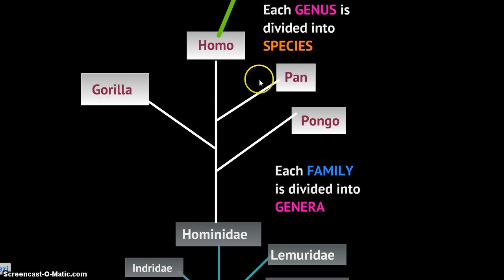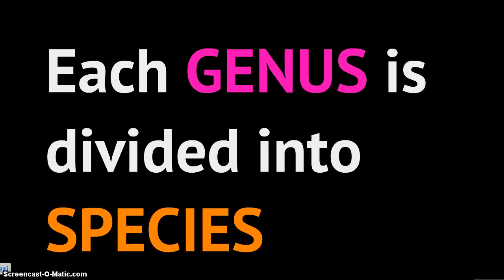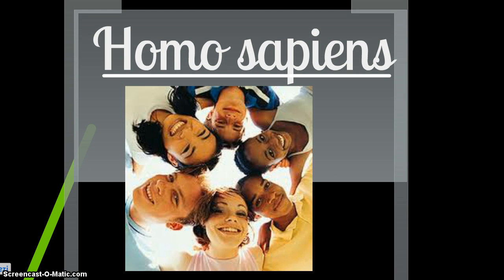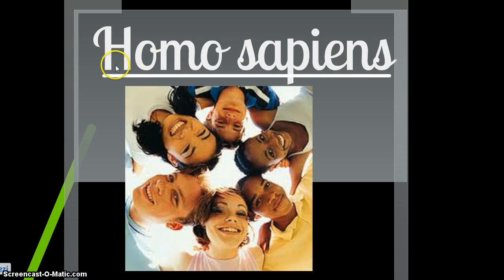Within family Hominidae the genera include Gorilla, Homo (humans), Pan (chimpanzees), and Pongo (orangutans) — the great apes. Our genus is Homo. When you write a scientific name, you include the genus name first and the species name second. The genus name must always be capitalized, the species name can never be capitalized, and you must include both. When typing, write it in italics; when handwriting, underline the genus and species name.